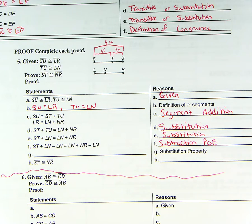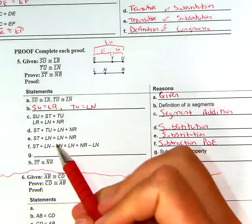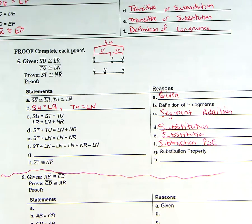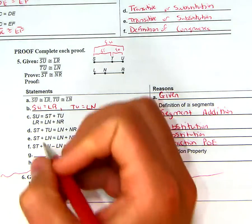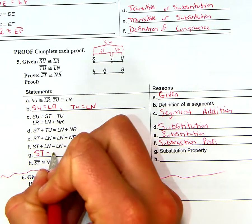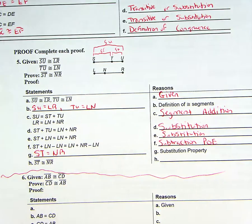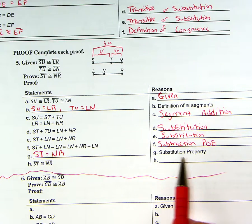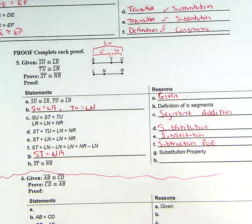So instead of saying minusing 4 on both sides, we are minusing LN on both sides, which cancels out the LNs here and this LN and that negative LN. And you're left with ST equals NR using substitution. Simplifying, we're just simplifying here. Your book uses that as substitution a lot as well.